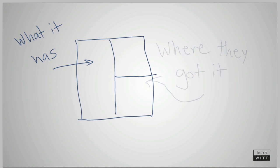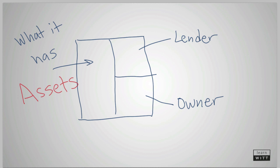In the previous lesson, this box was described. It shows what a company has and where it got it from, whether from a lender or an owner. In accounting, the term used to represent the left side of the box is assets. Assets are everything that the company has. If it is owned by the company, it is an asset.